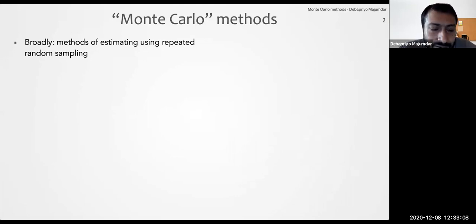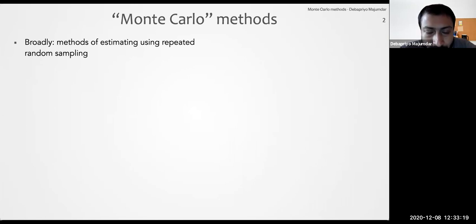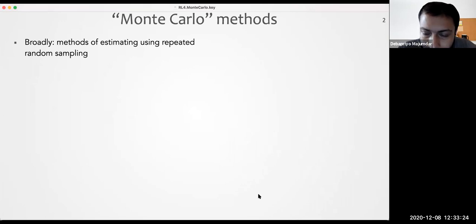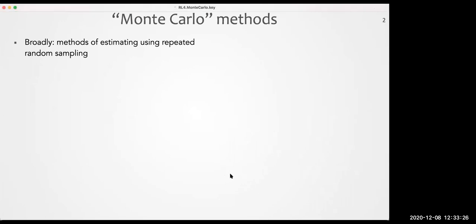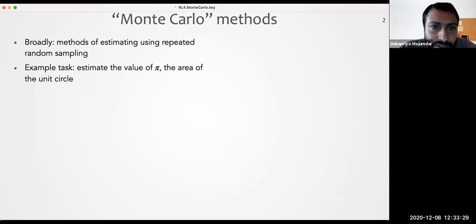Broadly, Monte Carlo methods can be used to do many things, and once you see it, it's actually very intuitive. It's essentially methods of estimating using repeated random sampling. Let's see a couple of examples before we start to apply this in reinforcement learning. Suppose we have to estimate the value of pi — the area of the unit circle.